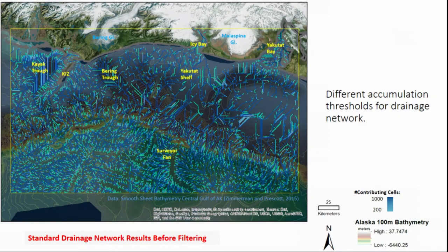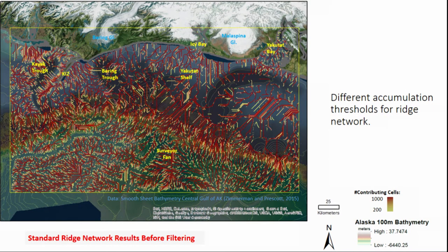This is what the drainage network looks like — the colors are different accumulating cells. There are some problems with this ridge network. We have a lot of long straight segments that are probably not real, so we're going to apply some filtering.